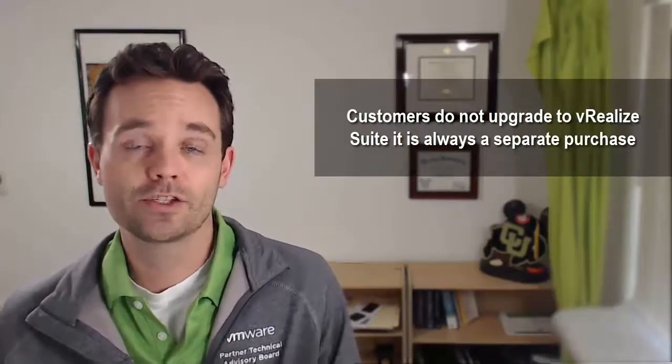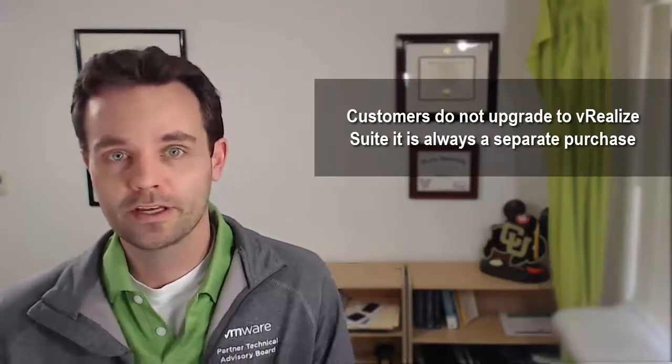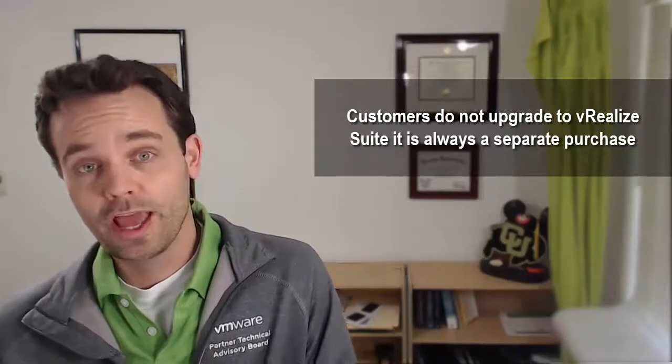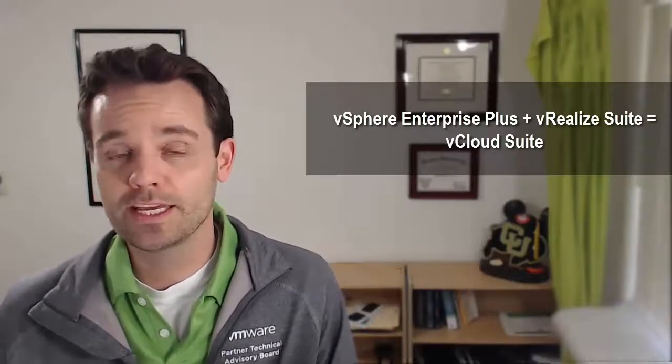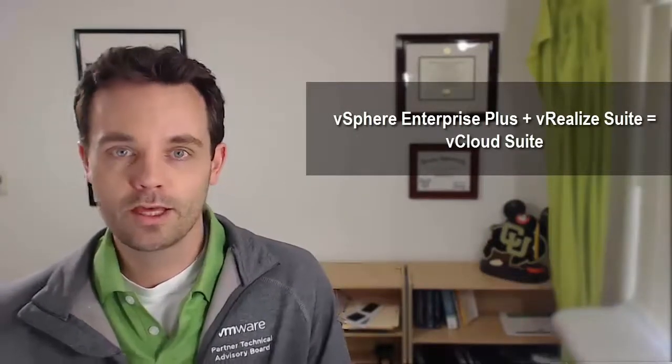Or what about a scenario where we have a customer that asks to upgrade from Enterprise Plus to vRealize Suite? And this one's a bit tricky in that scenario because ultimately, there's not an upgrade SKU for that. All we're going to do in that scenario is add vRealize Suite onto Enterprise Plus and that gives the customer what they're asking for. Ultimately, they actually end up with vCloud Suite if they have Enterprise Plus. So again, we're always going back to that equation, as it were, of vSphere Enterprise Plus plus some version of vRealize Suite equals vCloud Suite. So if you have customers thinking, oh, the end game is vRealize Suite, if they have Enterprise Plus and they add vRealize Suite to it, they end up with vCloud Suite.